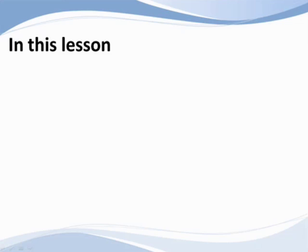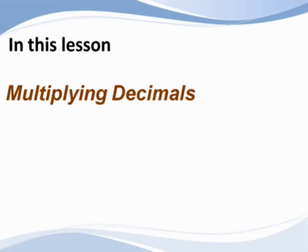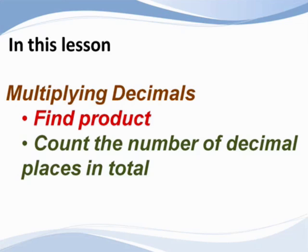When multiplying decimals, all we need to do is find the product of the numbers and then place the decimal point. The decimal position is the total of the number of places that are in all the numbers being multiplied together.